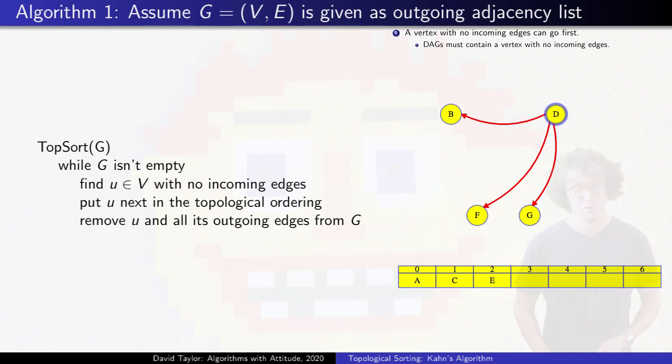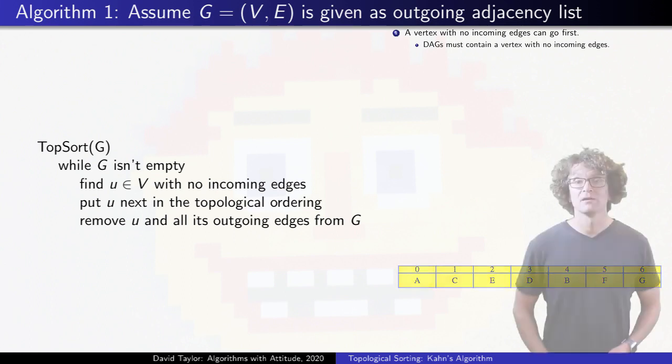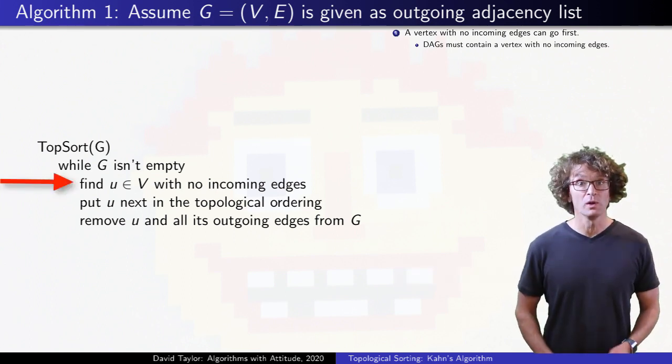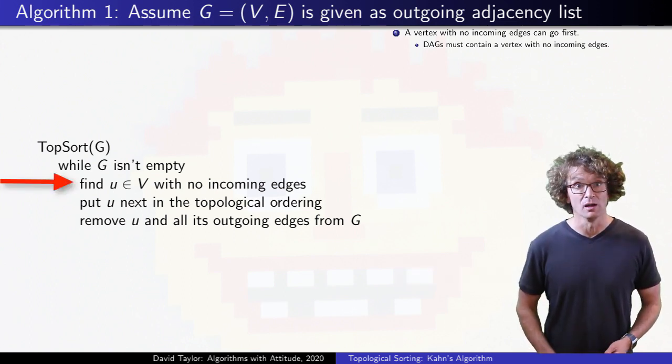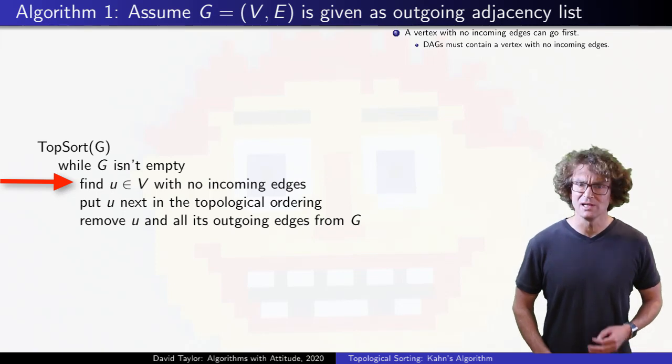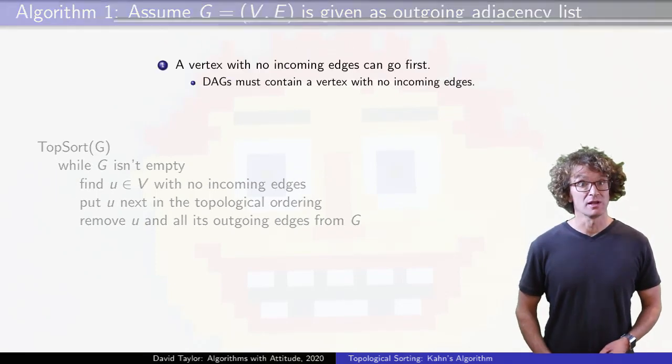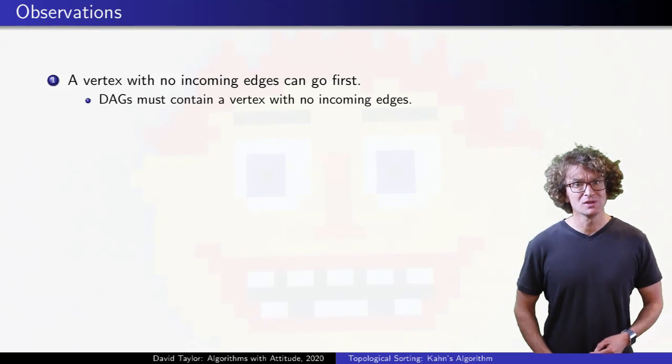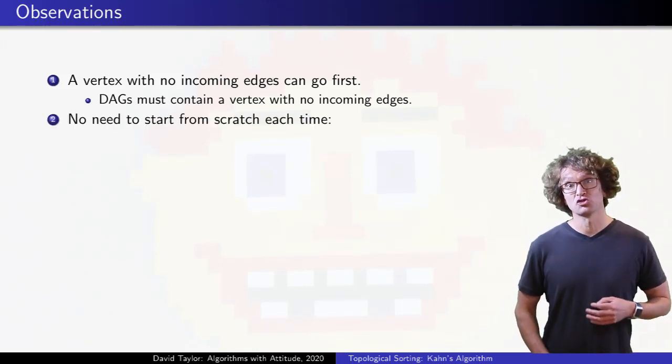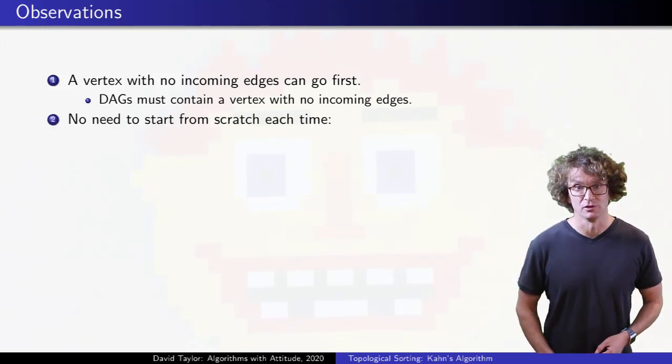That algorithm works. Its efficiency depends on implementation details, but if we get the graph in outgoing adjacency list format, finding a vertex with no incoming edges might take a while, and we do that once for each vertex we put into the ordering.